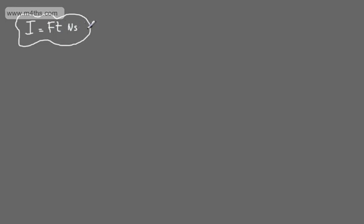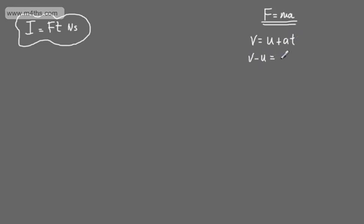This is one way we can write impulse. What we're going to do is look at another way, and this is going to help us solve some problems later on when we look at momentum. Let's take Newton's second law: force is equal to mass times acceleration. I'm going to take one of the SUVAT equations, that is v is equal to u plus at. Rearranging: v minus u is equal to at. Dividing through by t, we've got v minus u over t is equal to a.